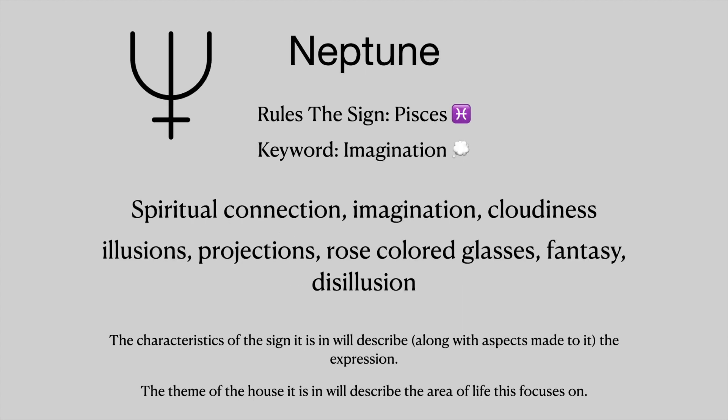Neptune rules the sign of Pisces and the keyword is imagination. This describes our relationship with our spiritual connection and imagination. It can describe cloudiness and illusions, projections, rose-colored glasses, fantasy, and disillusion.